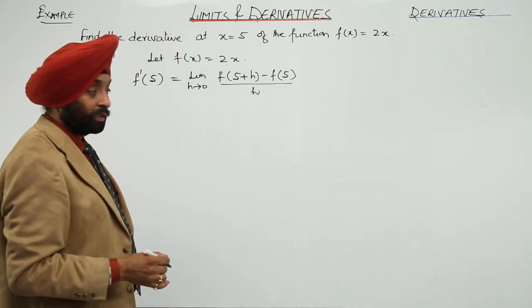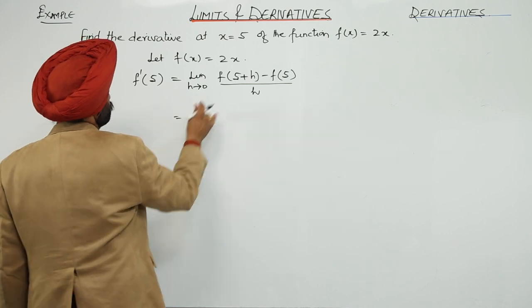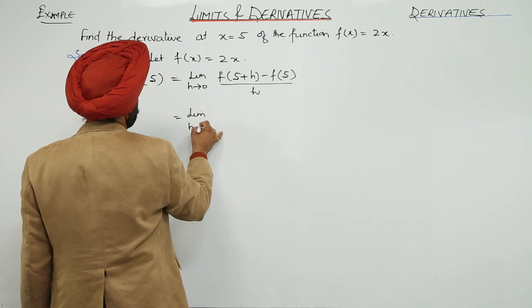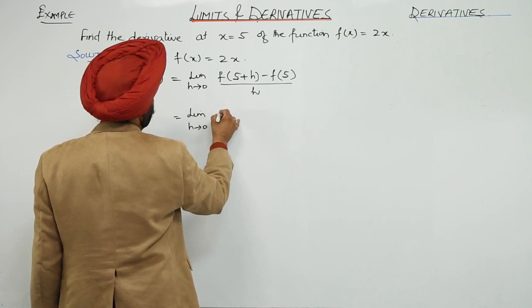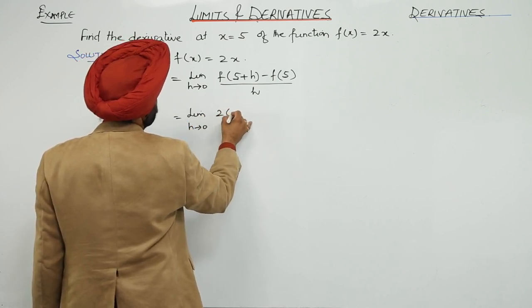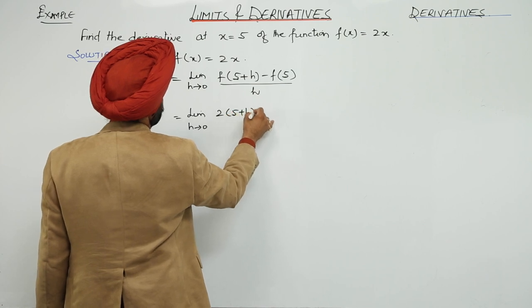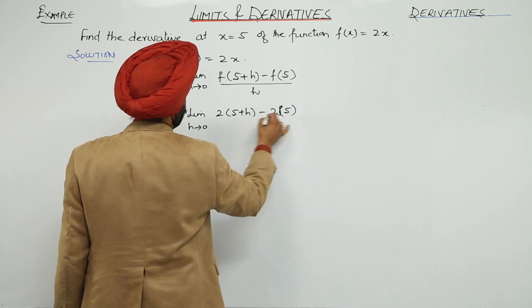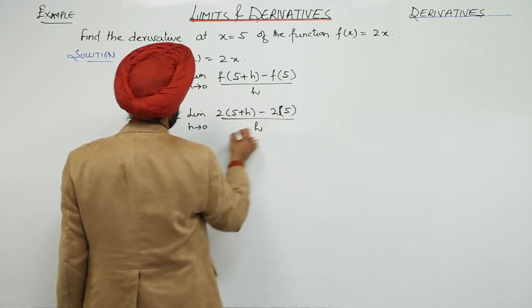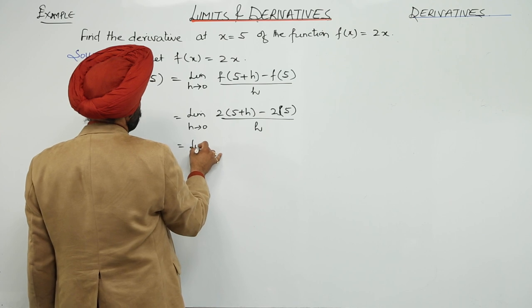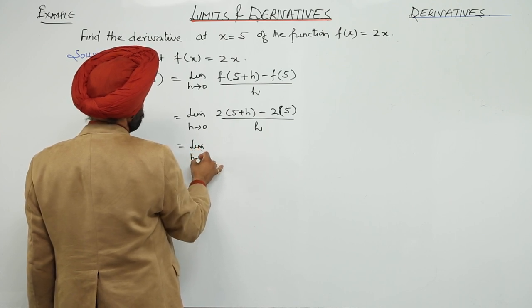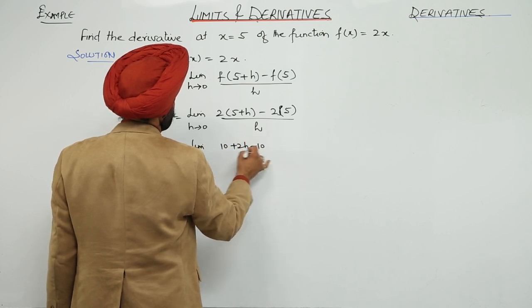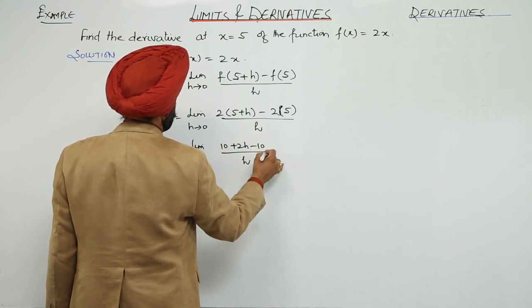Is it clear? So now using this, this becomes limit h approaches to 0 of 2(5 plus h) minus 2(5), upon h. Limit h approaches to 0 of 10 plus 2h minus 10 upon h.